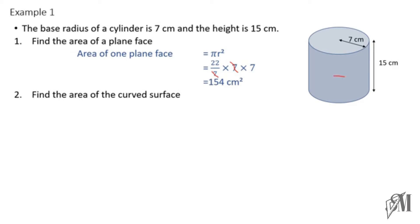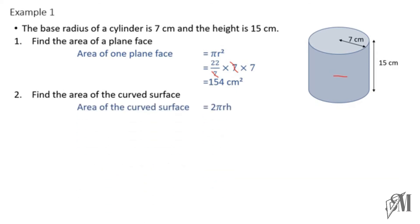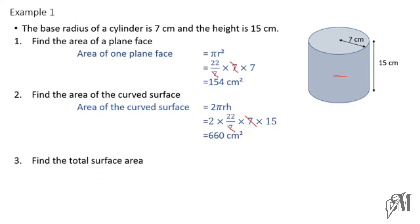Substituting the values into 2πrh, we cancel the 7s again and the answer for the curved surface area is 660 square centimeters. The third part asks us to find the total surface area.